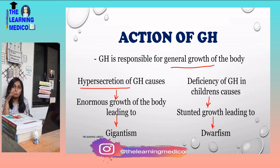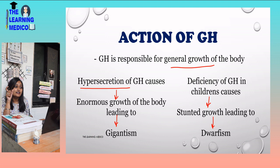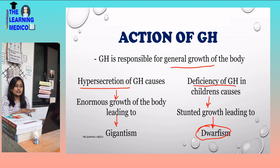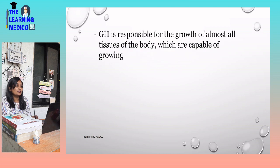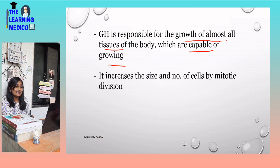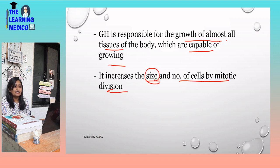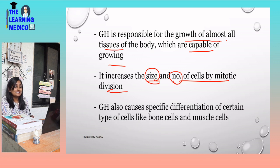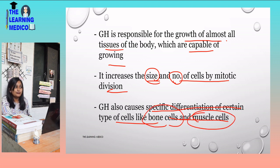Dwarfism — you can see those people whose age is grown up but they are still very short in height. The disease here is dwarfism, caused by deficiency of growth hormone in children. Growth Hormone is responsible for the growth of almost all tissues of the body which are capable of growing. It increases the size and number of cells by mitotic division. Growth Hormone also causes specific differentiation of certain types of cells, like bone cells and muscle cells.